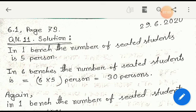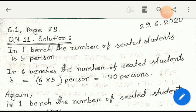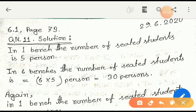At first, we have to write: in one bench, the number of seated students is five persons. Now we write, in six benches, the number of seated students is - if one bench has five persons seated, which process do you apply? Yes, it's multiplication: six into five equals thirty persons. We have to multiply, thirty persons here.